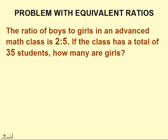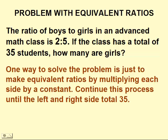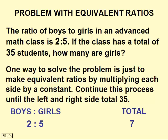Now let's do a problem with equivalent ratios. The ratio of boys to girls in an advanced math class is 2 to 5. If the class has a total of 35 students, how many are girls? One way to solve the problem is just to make equivalent ratios by multiplying each side by a constant. Continue this process until the left and right side total 35. So we'll start with our ratio of boys to girls, 2 to 5, which would give us a total of 7.